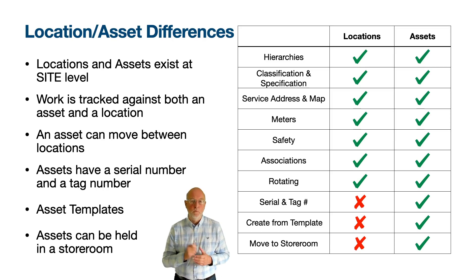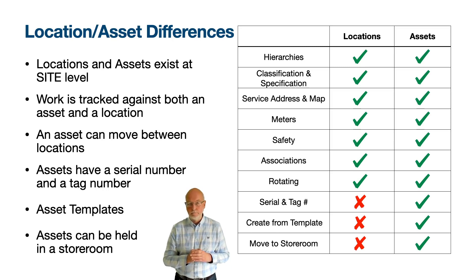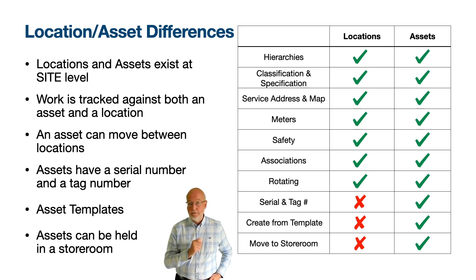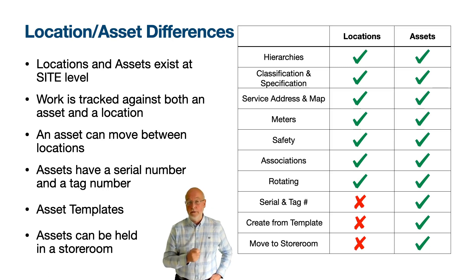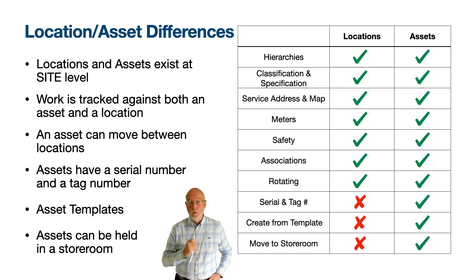Maximo also supports, with assets, the infrastructure of roads, rails, and pipes using the linear assets functionality. If a piece of equipment never enters the storeroom and does not have a serial number, then if you have already defined it as an operating location, you must ask yourself for what reason you also want to create an asset record for it. There may be genuine reasons for creating an additional record, but you should at least ask yourself what the asset record will be used for.